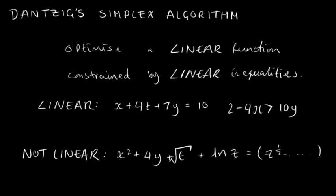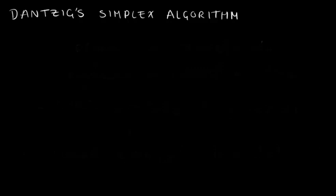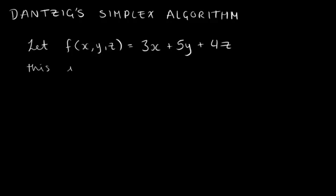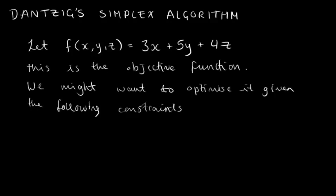For example, we might have the linear function 3x plus 5y plus 4z, and we may want to find the smallest values for x, y, and z, such that the following inequalities are also true for our values.